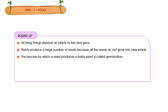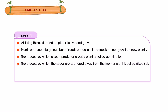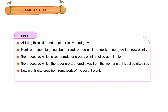The baby plant is called germination. The process by which seeds are scattered away from the mother plant is called dispersal. New plants also grow from some parts of the parent plant. Different plants grow in different climates and seasons.